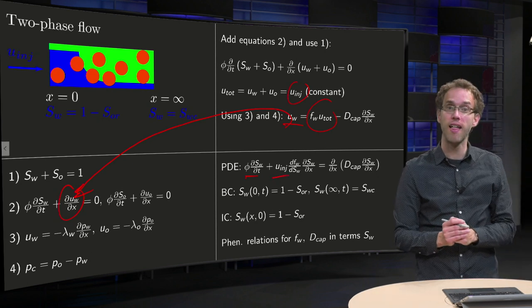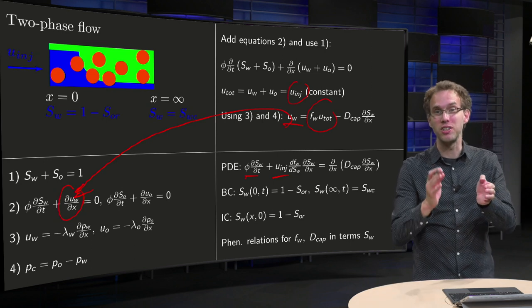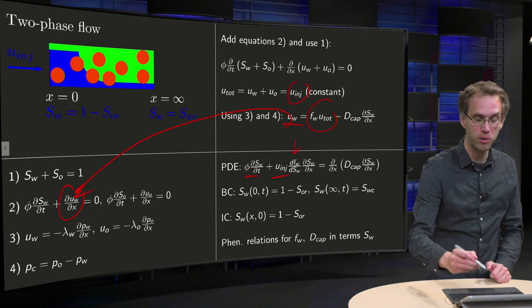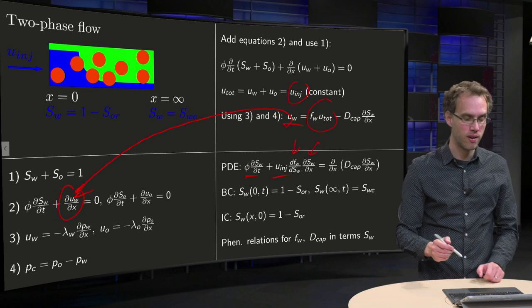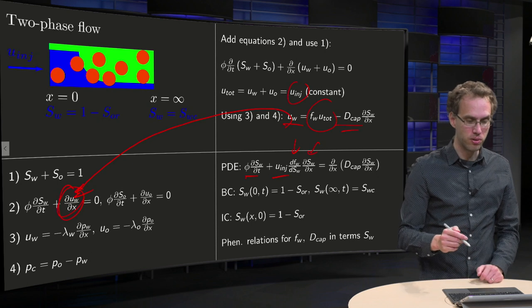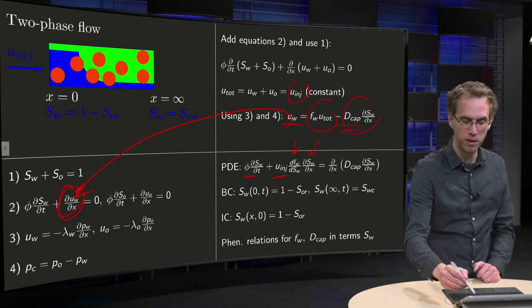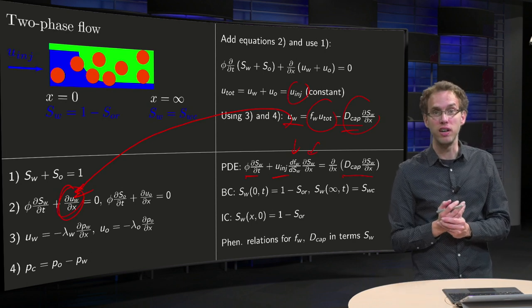F_w depends on x only via S_w, so you get dF_w/dS_w times dS_w/dx. Then you have the d/dx of the capillary term. It's often brought to the other side, so you get the d/dx of this term with a plus sign. That's the PDE governing your flow.